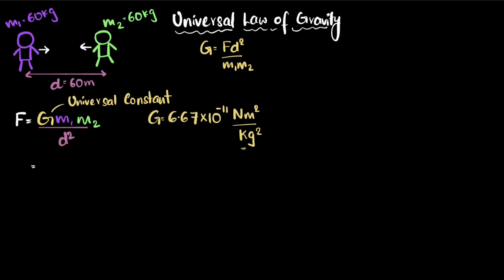We get 6.67 times 10 to the power minus 11 times the mass of the first object, which is 60 kilograms, times mass of the second person, that is 60 kilograms, divided by d squared. D is 60, but you have to square it. And this cancels out, 60, 60, 60 squared.